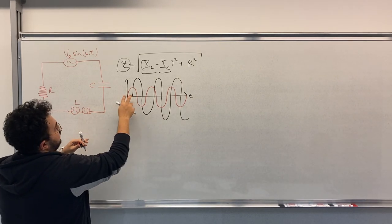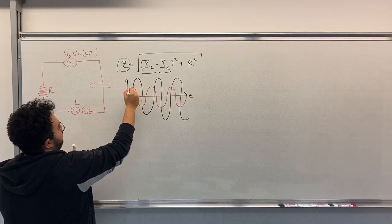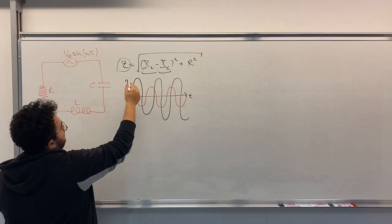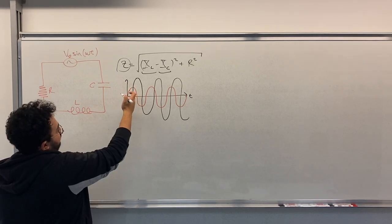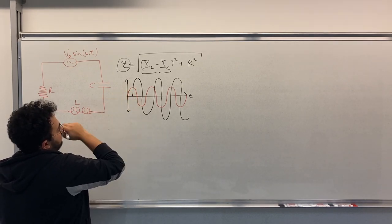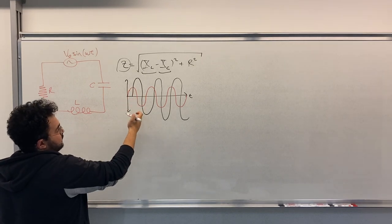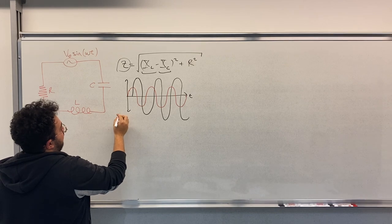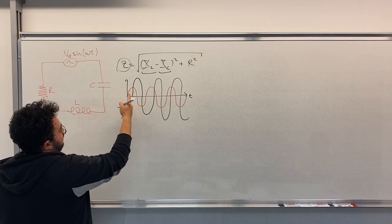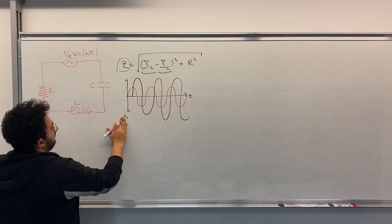So the omega values for both signals are the same, but the differences are the phase and the magnitude of them.